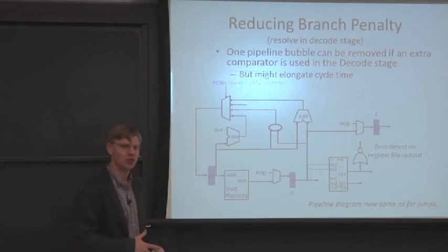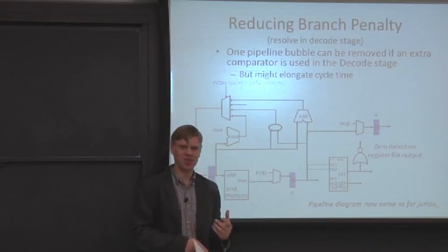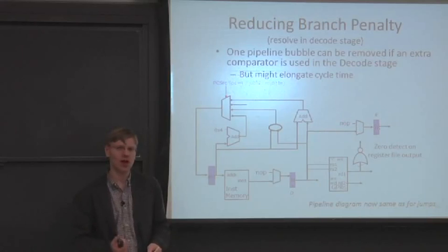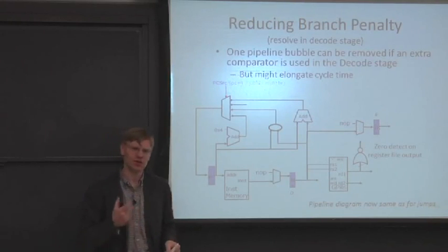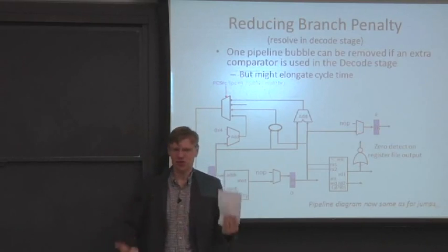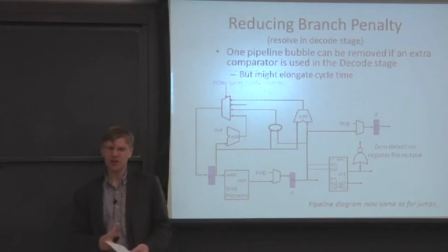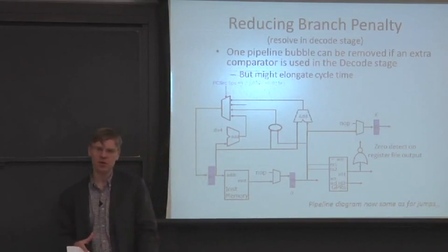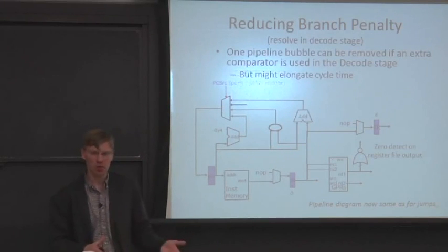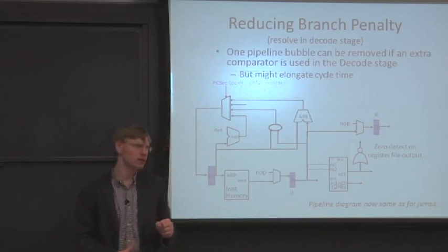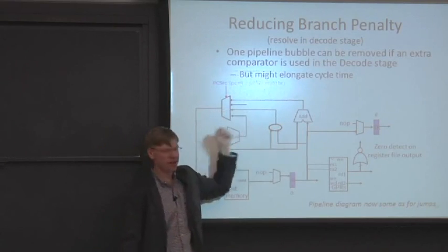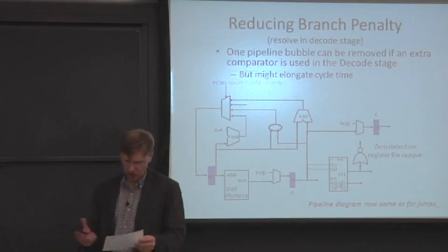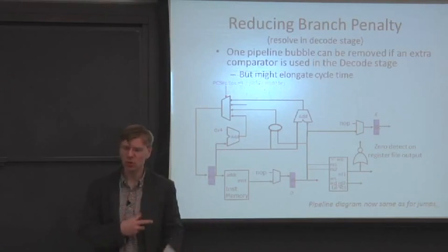As discussed in the iron law of processor performance, you can gain performance by lowering clocks per instruction or by increasing clock frequency. These trade off: elongating cycle time negatively impacts time-per-program, but resolving branches faster lowers aggregate clocks per instruction. So this is only one approach.